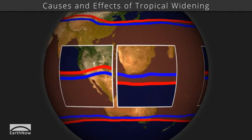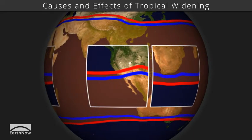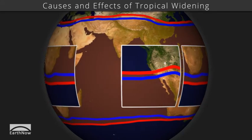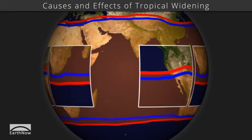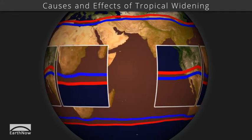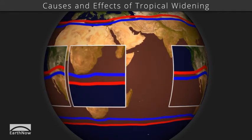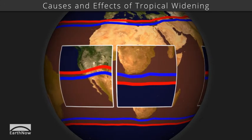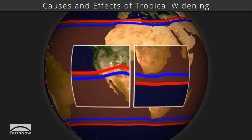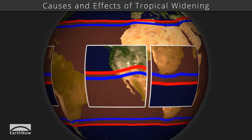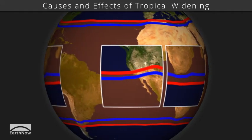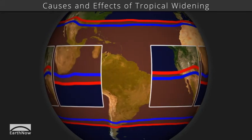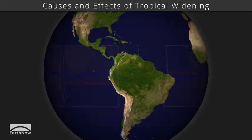Notice the northern edge of the tropics shifted northward by an average of 4 degrees, while the southern edge shifted southward by about 6 degrees. That's a widening of about 10 degrees over 30 years. It might not look like much, but it has significant impact.